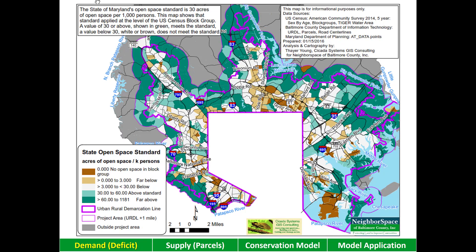Another way of looking at the open space deficit is to apply the state's open space standard, which is 30 acres of open space per 1,000 persons. This standard is used by the state in allocating program open space funding to counties. In this map, areas that are white are below the standard, areas that are tan are far below the standard, and areas that are brown have no open space in their census block group. Just look at how much of the area inside the ERDL is white, tan, or brown, indicating that the state standard has not been met.